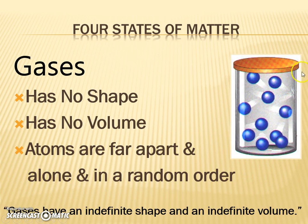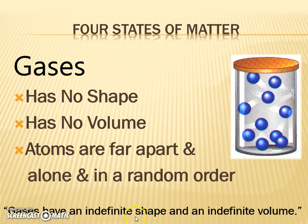Gases — you'll notice that this cup has a lid on top because gases would escape everywhere since they have no shape. They take the shape of the container, and they have no volume. The atoms are very far apart, alone, in lesser molecules — like a water molecule can also be a gas — and they're just flying around in random order. Gases have an indefinite shape and an indefinite volume, meaning we can compress them to a smaller size or they could take up the size of a whole room.